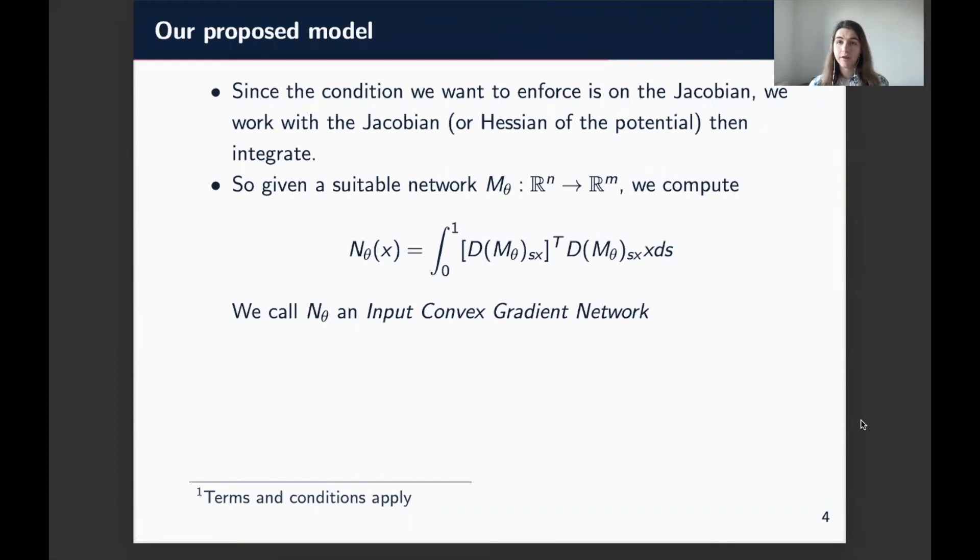It looks like starting with M theta, which is this explicit network, this hidden network. We compute this line integral of its symmetrized Jacobian. We're going to call this an input convex gradient network so that the network itself, the output values, are actually given by numerically computing this line integral of this matrix.